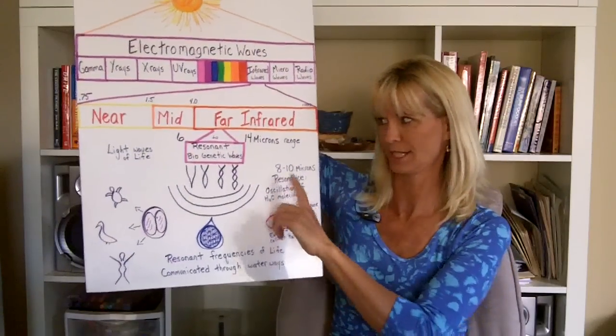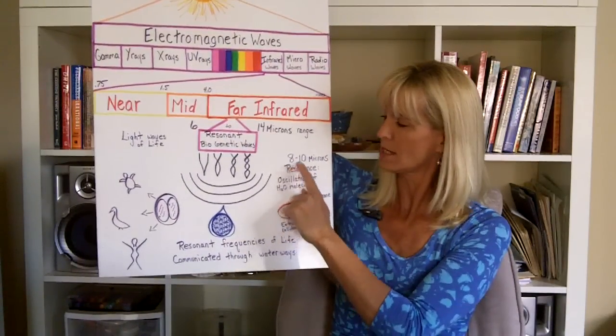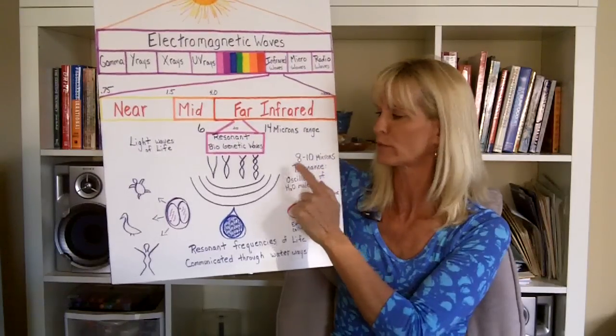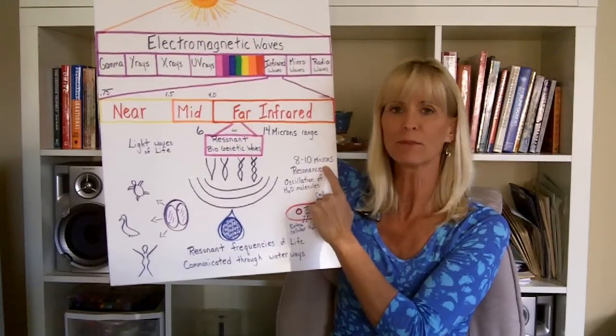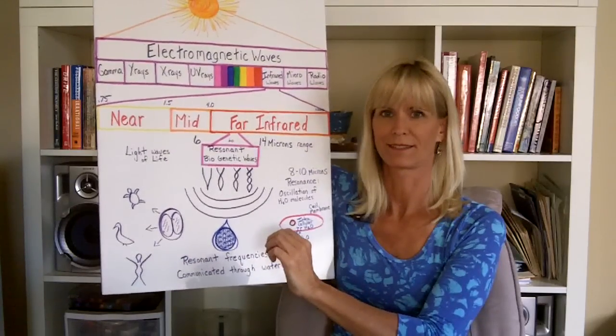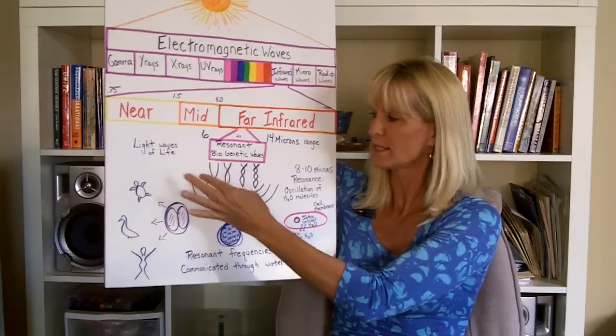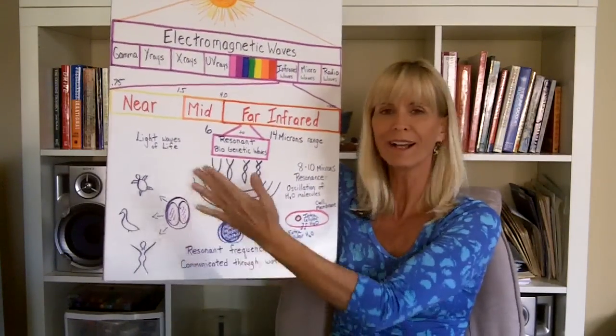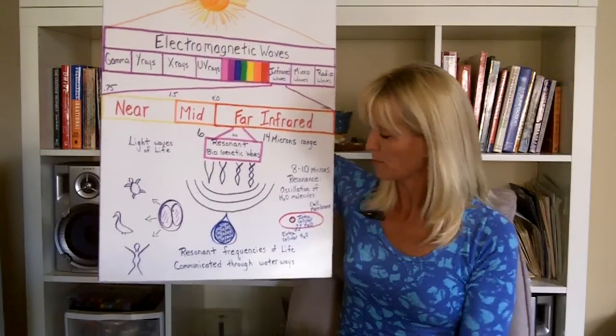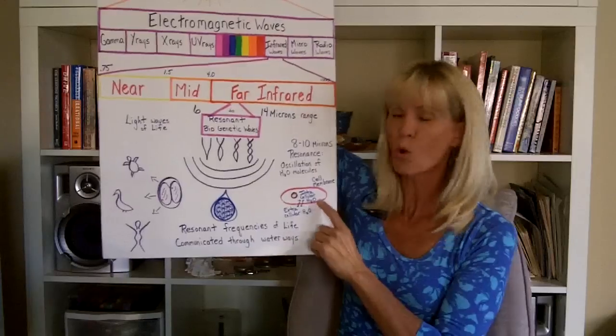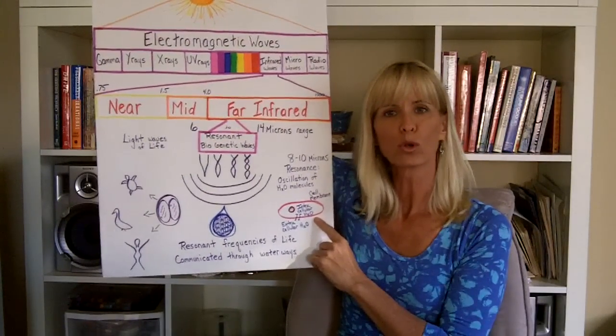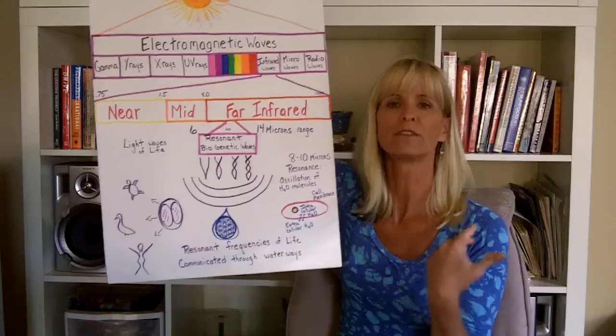What they discovered is that when water is exposed to a far infrared range of between 8 and 10 microns, its oscillation causes a resonance. This resonance wave is why life is really a big part of how life came about. When the water is oscillating like this, it's called ionization or water activation.